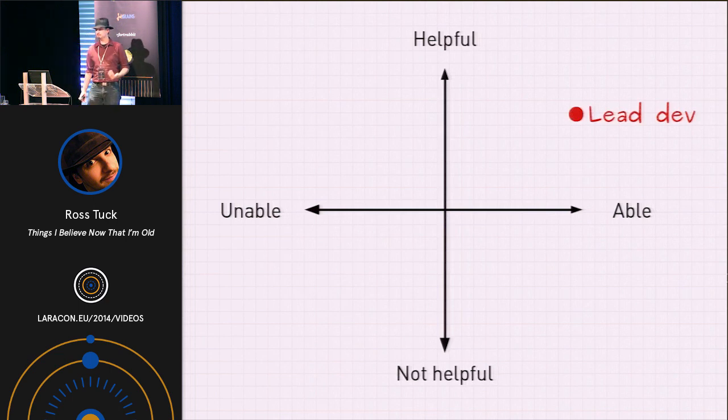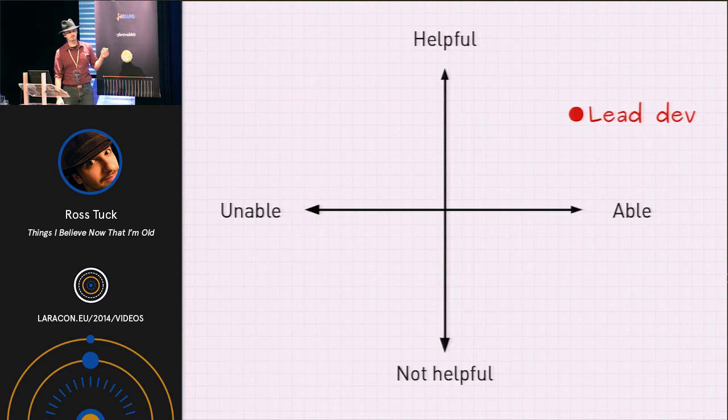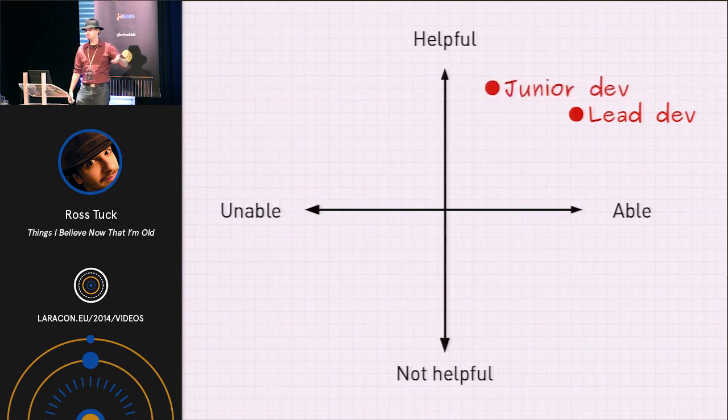Now, if you were to chart somebody you know, like a lead developer, I would put them somewhere around here. Not the most helpful, but very helpful. Lots of experience. They want you to succeed. I would put, say, a junior developer, on the other hand, somewhere around here. Not quite as much experience as a lead dev, but for some reason that smidge more helpful.